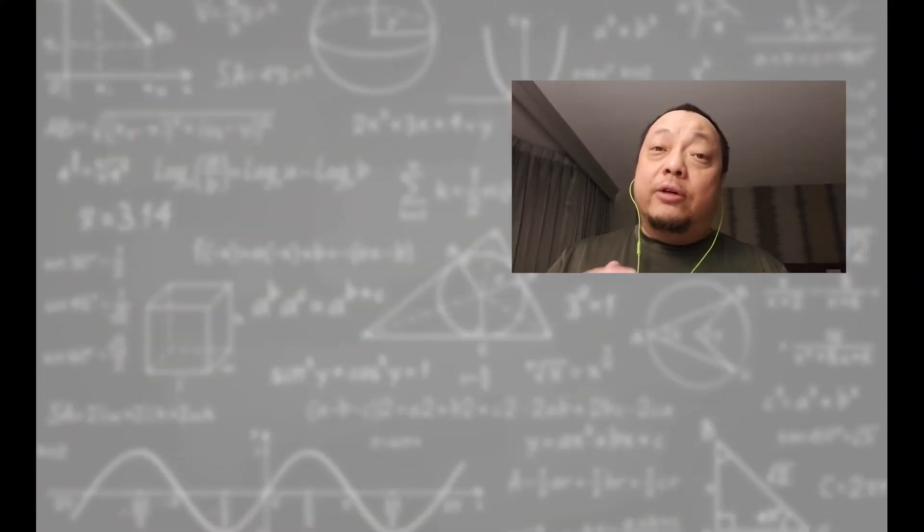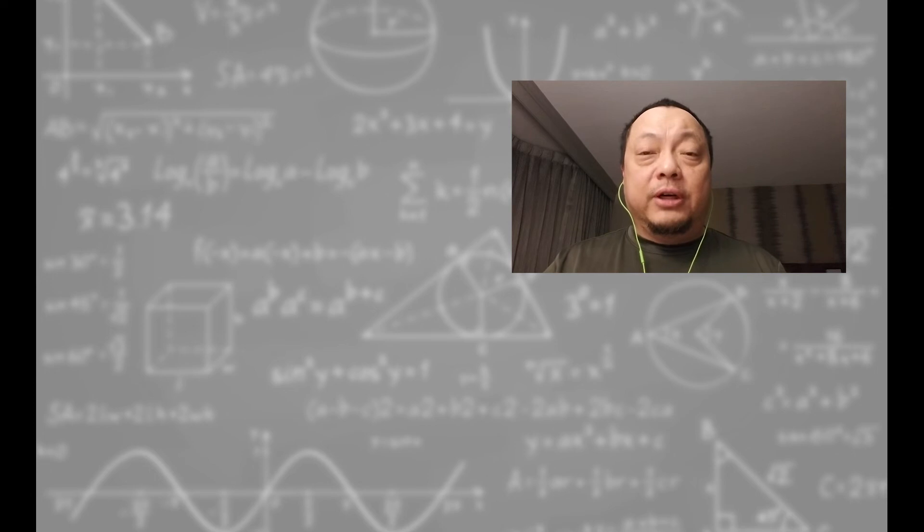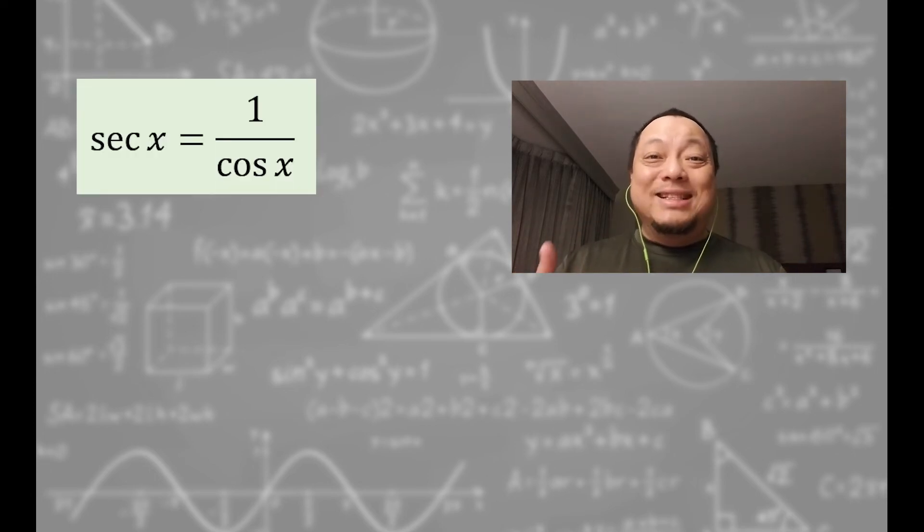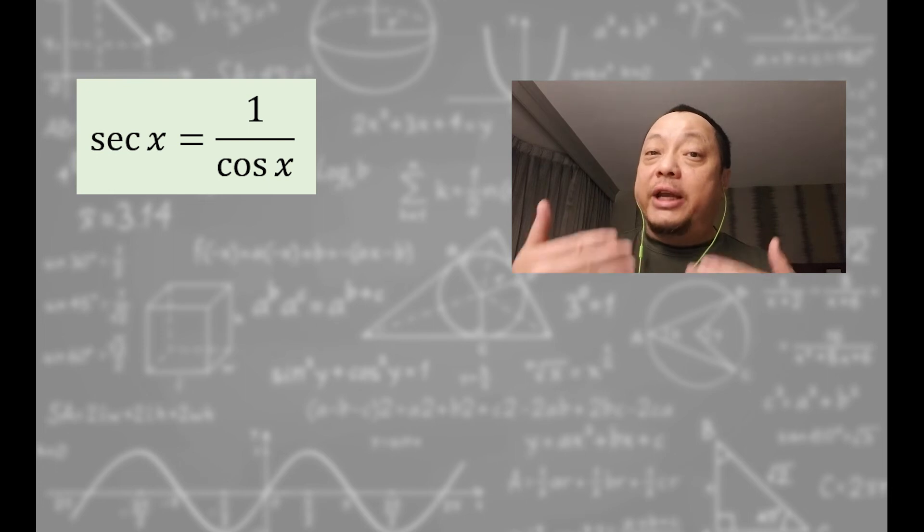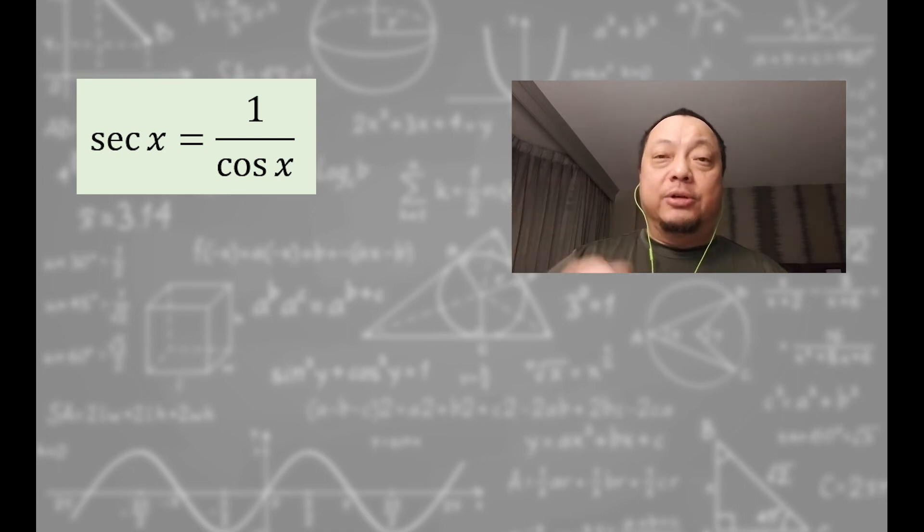That's how you find sine, cosine, and tangent of special angles. Now for the other trig functions, derive from there. For example, secant is 1 over cosine. If you need secant of 30 degrees, first find cosine of 30 degrees and take 1 over that number. Meaning take the reciprocal of that.